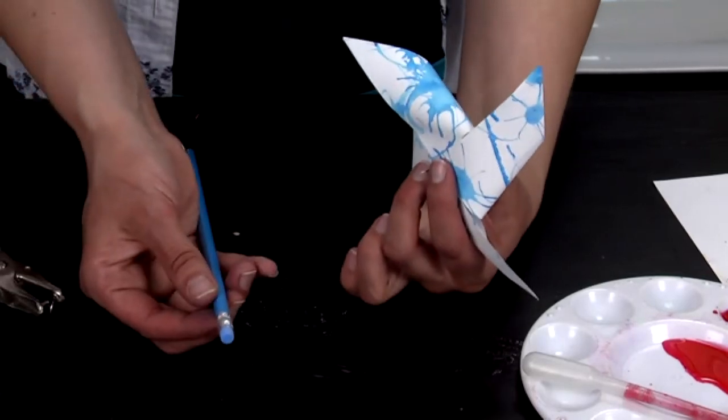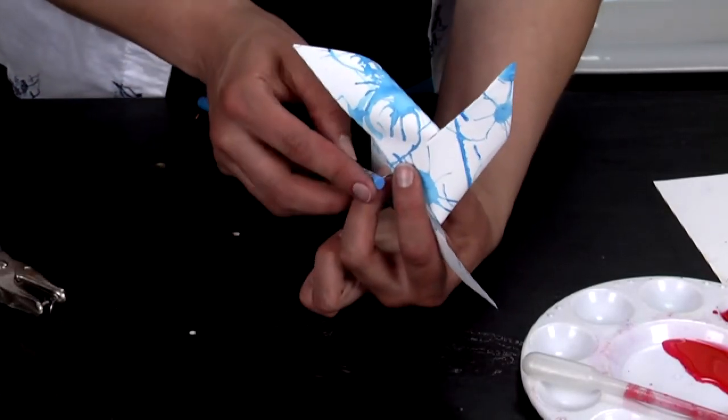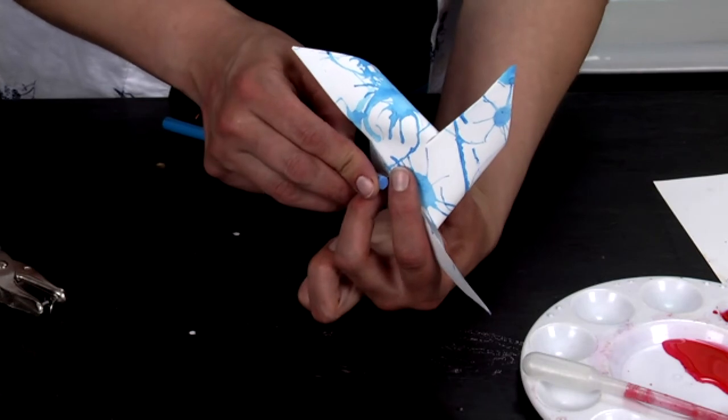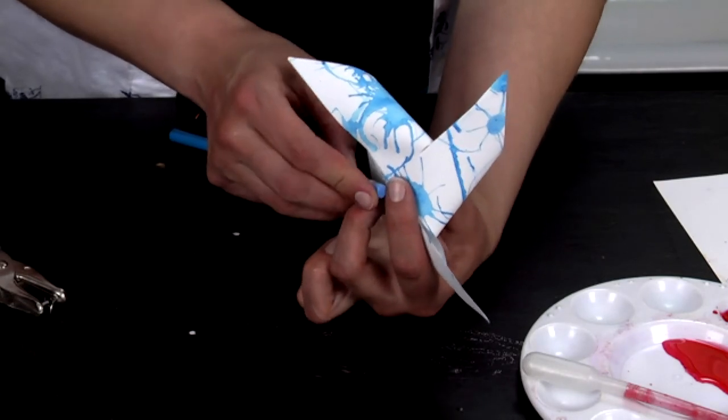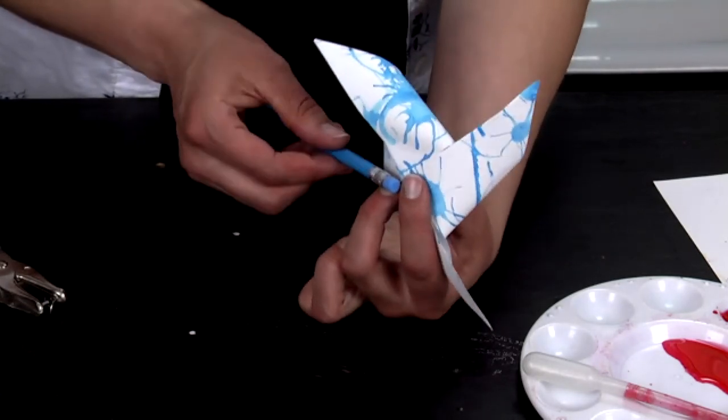You're going to take your blue pencil and go ahead and push it into the eraser, making sure you don't go all the way through. You want to leave some space there so your pinwheel can spin.